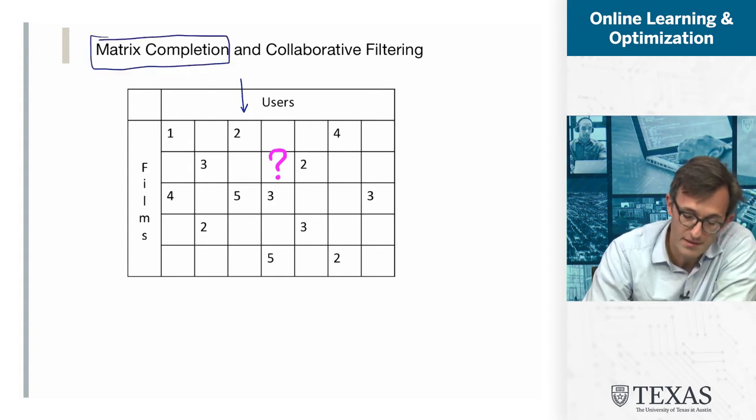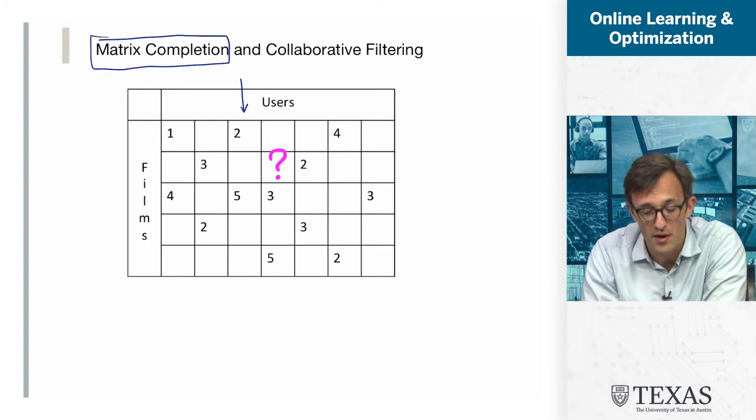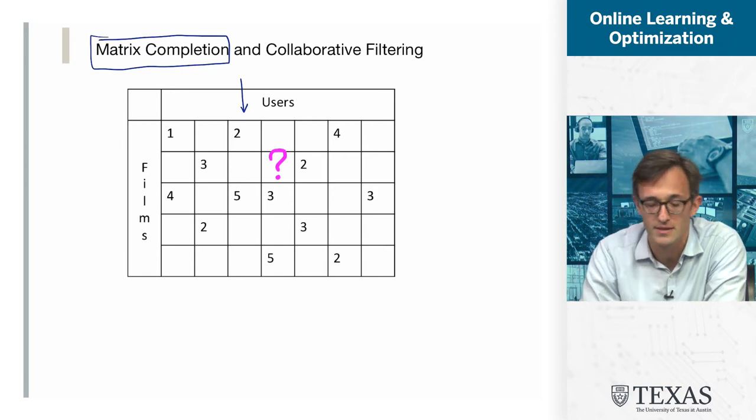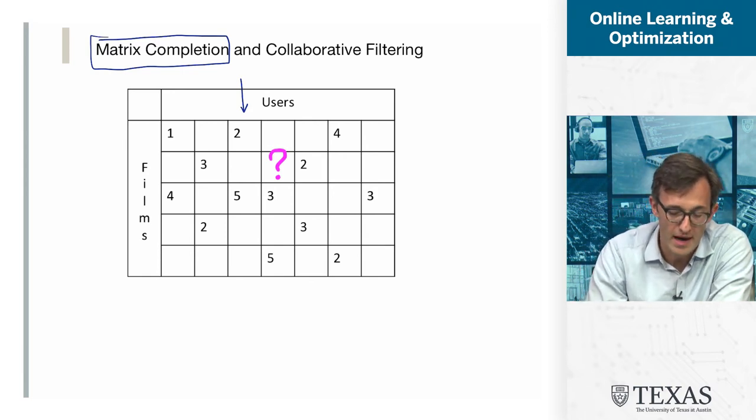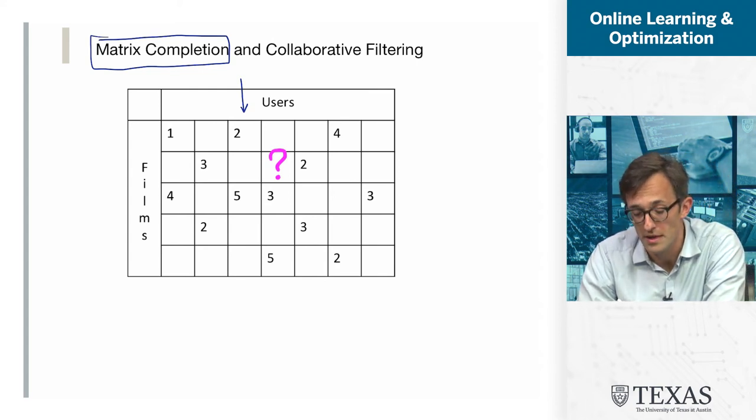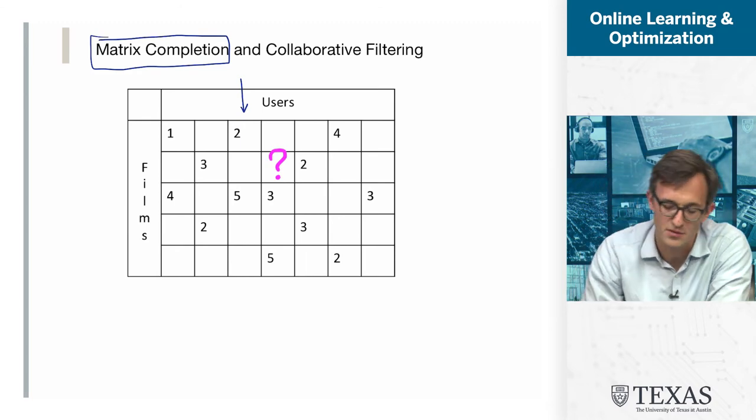So this is more abstractly called the problem of matrix completion, and this also can be modeled as an optimization problem. It also has missing values, but the optimization problem—in other words, the objective, the f that we find here—is very very different from the missing pixels problem that you just saw on the last slide. But nevertheless, I can also model this as minimizing a cost subject to x being in some constraint set, and we'll see more details of this as we move on.